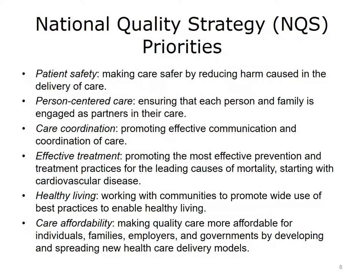To advance these aims, the NQS focuses on six priorities that address the most common health concerns that Americans face. Patient safety: making care safer by reducing harm caused in the delivery of care. Person-centered care: ensuring that each person and family is engaged as partners in their care. Care coordination: promoting effective communication and coordination of care. Effective treatment: promoting the most effective prevention and treatment practices for the leading causes of mortality, starting with cardiovascular disease. Healthy living: working with communities to promote wide use of best practices to enable healthy living. Care affordability: making quality care more affordable for individuals, families, employers, and governments by developing and spreading new health care delivery models.